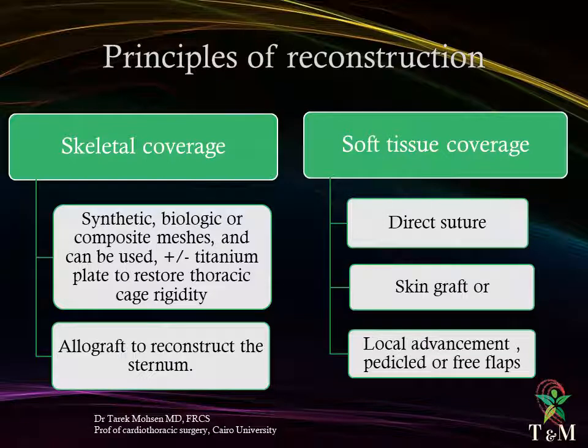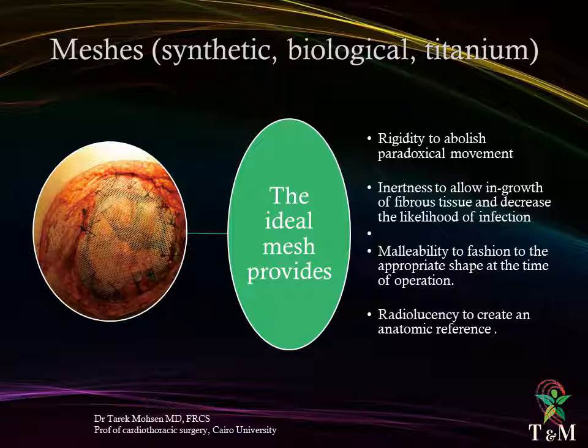Chest wall reconstruction requires skeletal coverage, and this can be achieved by synthetic, biological, or composite meshes, and can be used with or without titanium plates to restore thoracic cage rigidity. Allografts can be used to reconstruct the sternum. Soft tissue coverage can be achieved by direct suture, skin grafts, local advancement, pedicled, or free flaps.